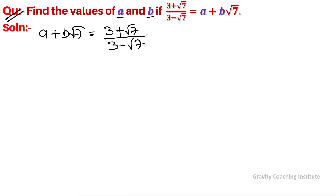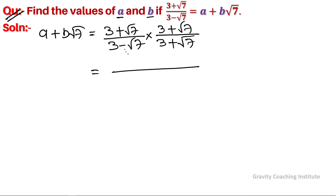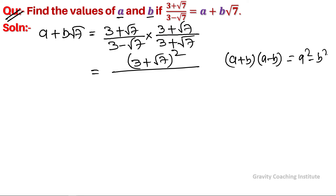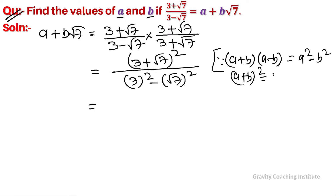To solve this, we rationalize — multiply numerator by (3 + √7). So the numerator becomes (3 + √7) whole square, and in the denominator we apply the identity (a + b)(a - b) = a² - b², which gives 3² minus (√7)². For the numerator, we apply the identity (a + b)² = a² + 2ab + b².